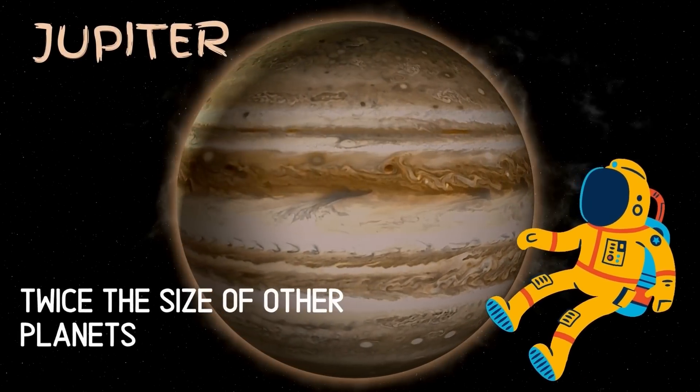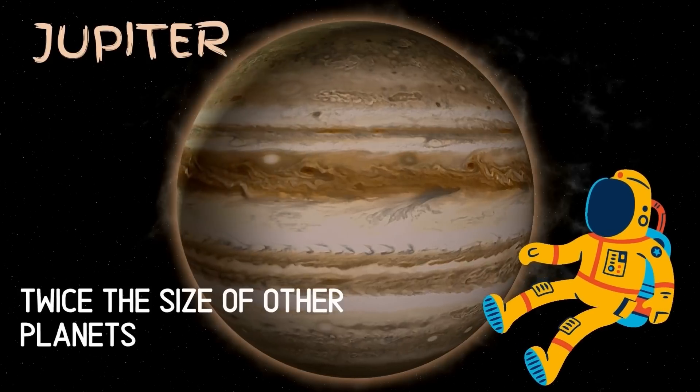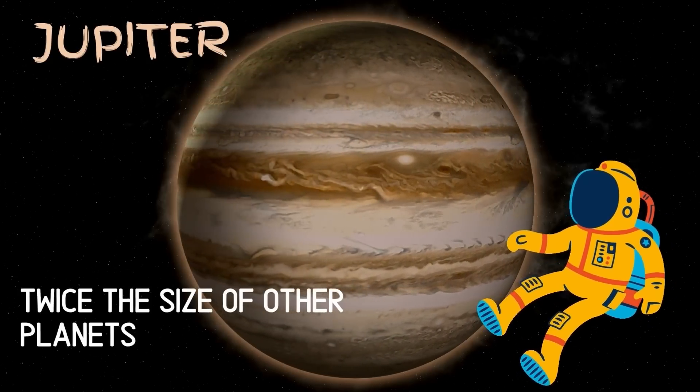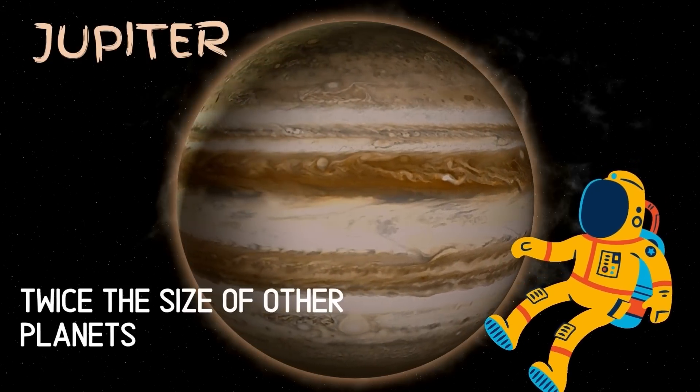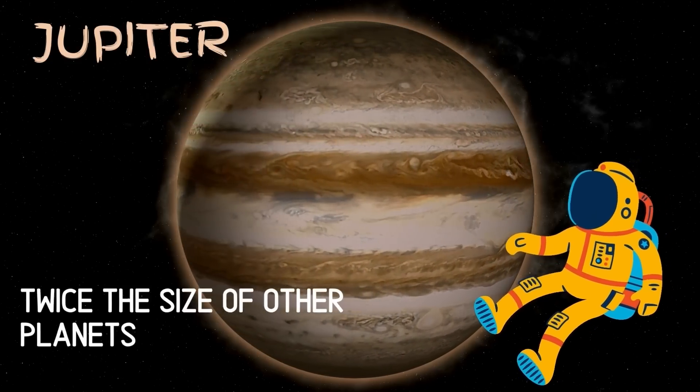Jupiter is the fifth planet from the sun and it is the largest planet of the solar system, almost twice the size of all the other planets combined.